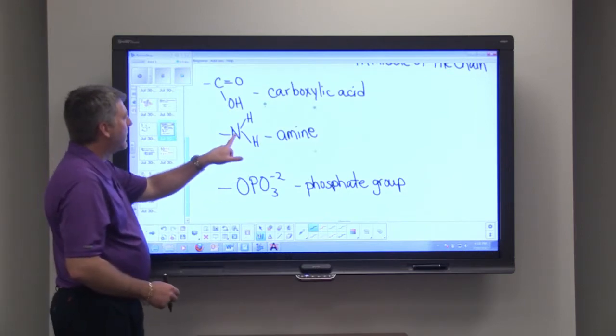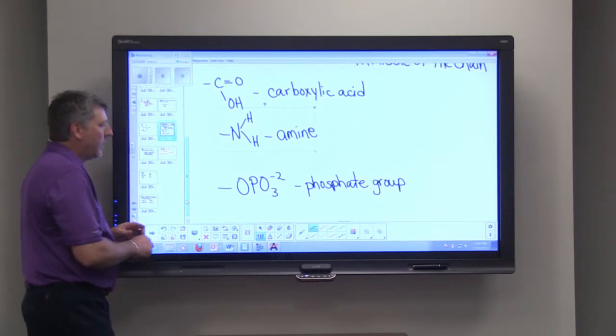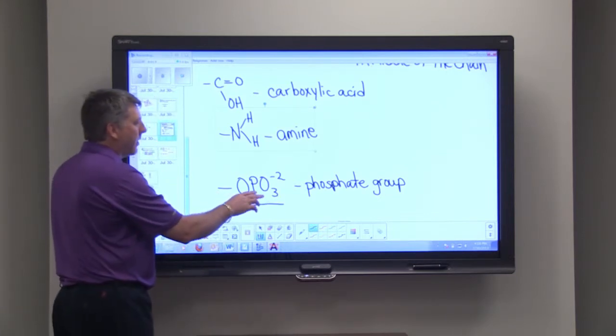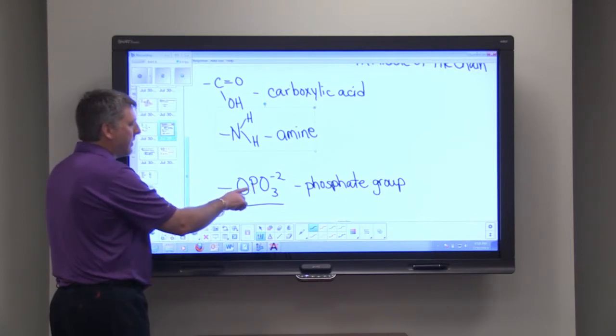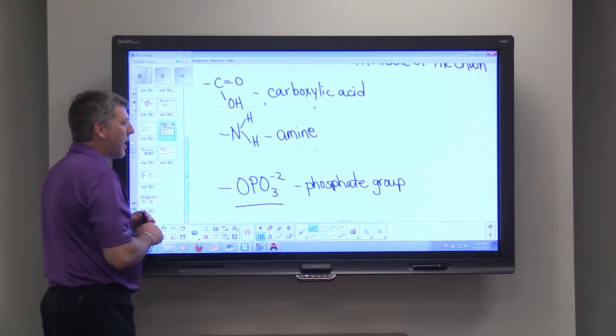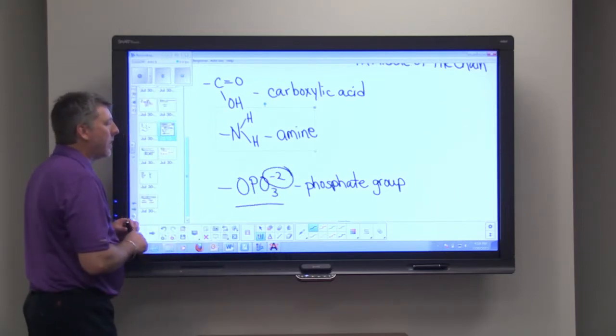Then there's a group called an amine group, and that's a nitrogen with two hydrogens attached to it. And then we have a phosphate group, and the phosphate group is an oxygen with a phosphate or phosphorus and three oxygens attached, and you see that carries a charge of negative two.